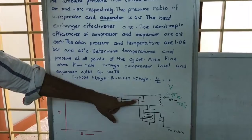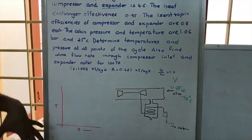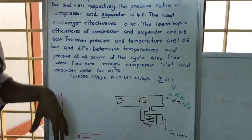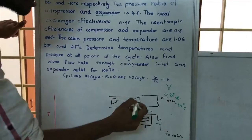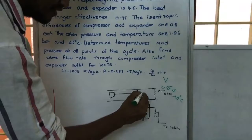The heat exchanger effectiveness is 0.95. After passing through the compressor, air passes through the heat exchanger. We use the heat exchanger because in the compressor both pressure and temperature increase. The purpose of the heat exchanger is to decrease that temperature back toward its value before compression. The heat exchanger effectiveness is 0.95.